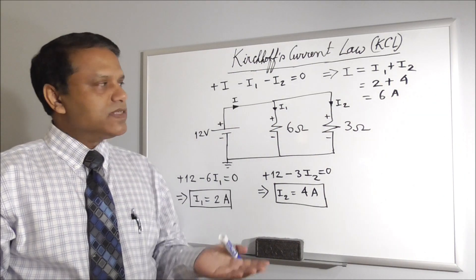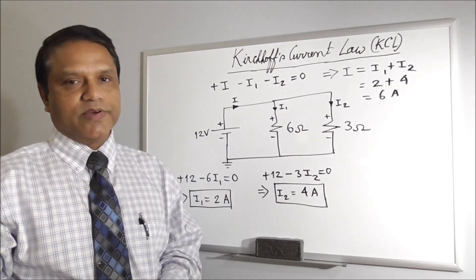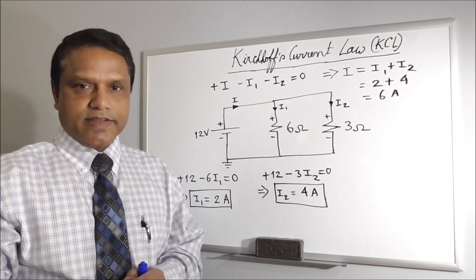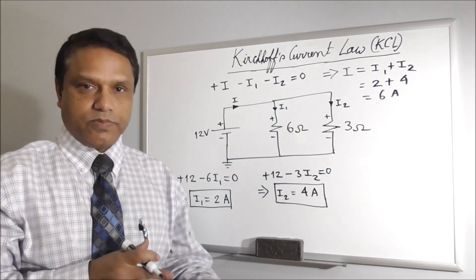So KCL is pretty simple. You can apply it at a node and you can find any one current that is not given if you know the rest of the currents.